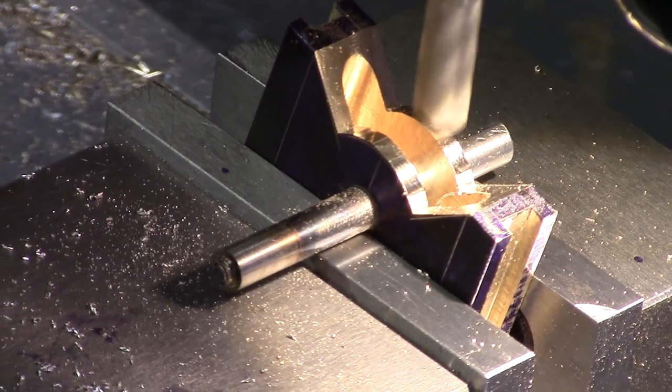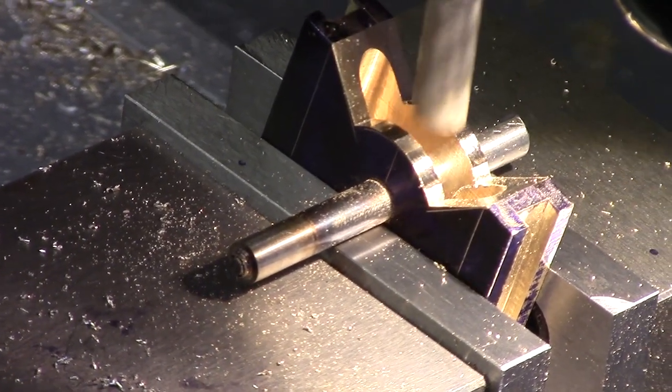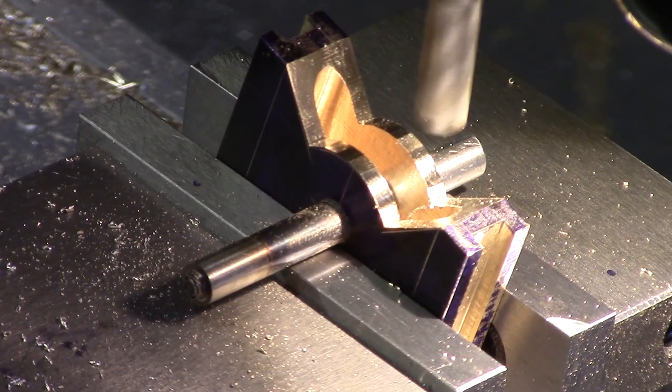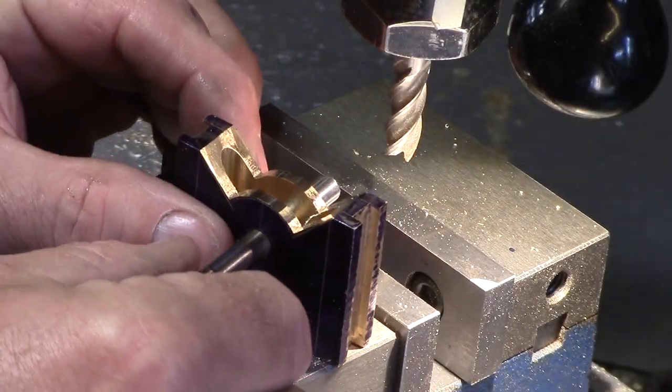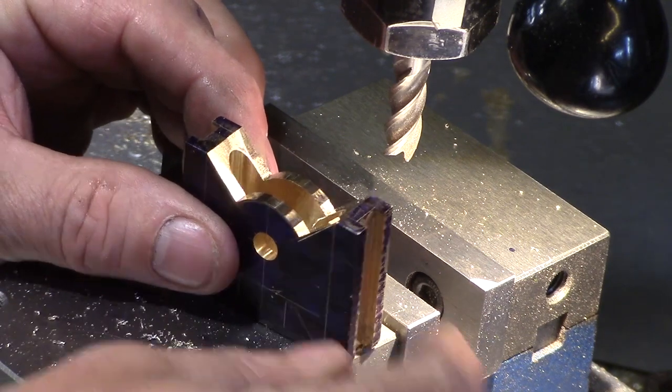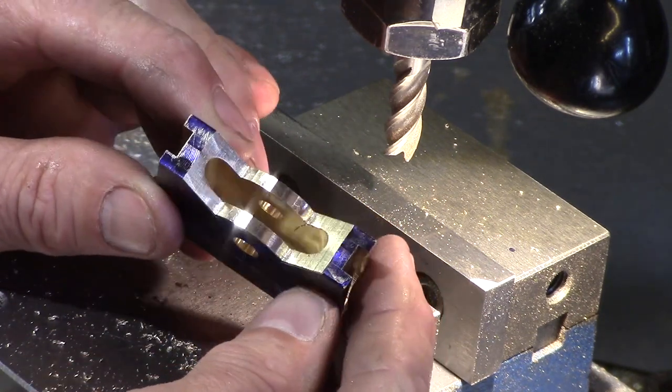The internal radius was formed by progressively rotating the part in the vise with the use of a temporary shaft in the centre hole until the rough curve was formed. You can see that it's made up of multiple flat surfaces.